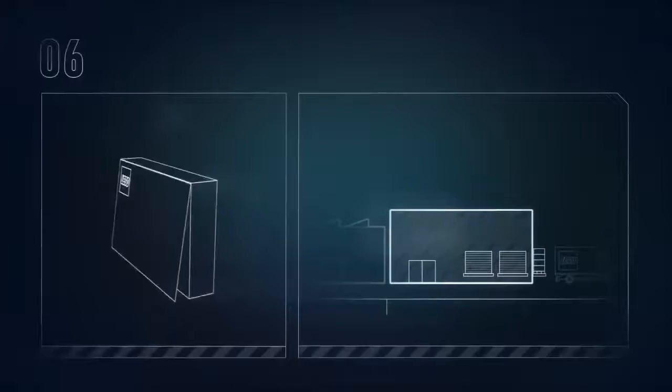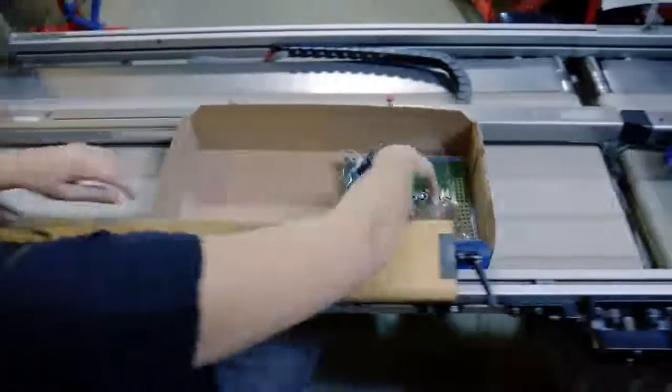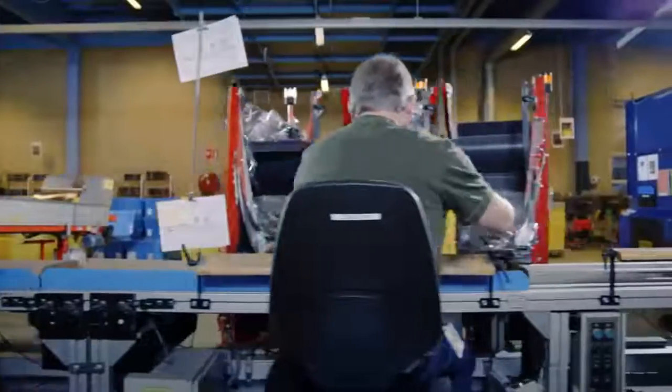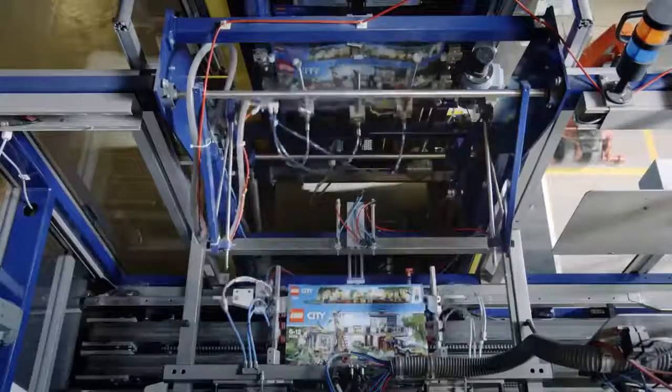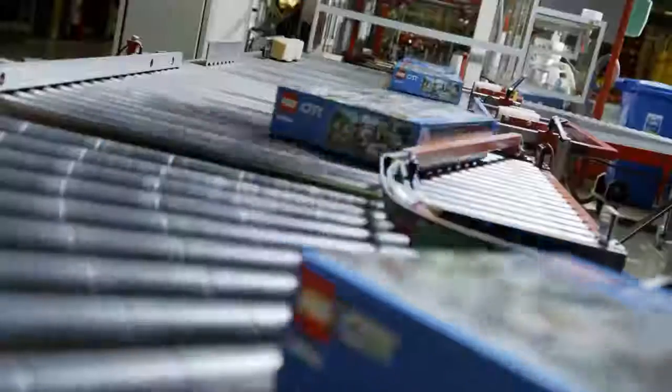The bags are dropped into open Lego boxes along with the building instructions and large special elements. The most efficient packaging lines pack over 50,000 boxes every 24 hours. Now the boxes are closed and sealed. Here we have final Lego boxes as we know them.